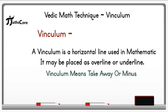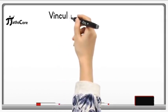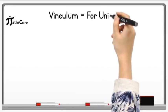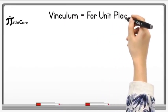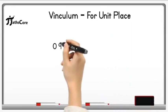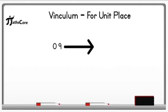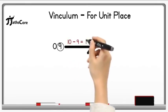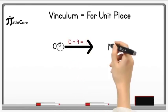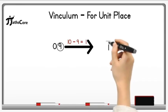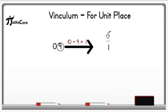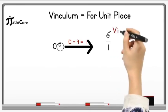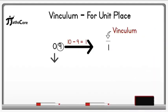To understand this concept better, let's take some examples. The first example is based on vinculum for the unit place. The example is 09. First of all, subtract 9 from 10. 10 minus 9 is equal to 1. Write down this 1 and place an overline on it — this overline indicates vinculum.